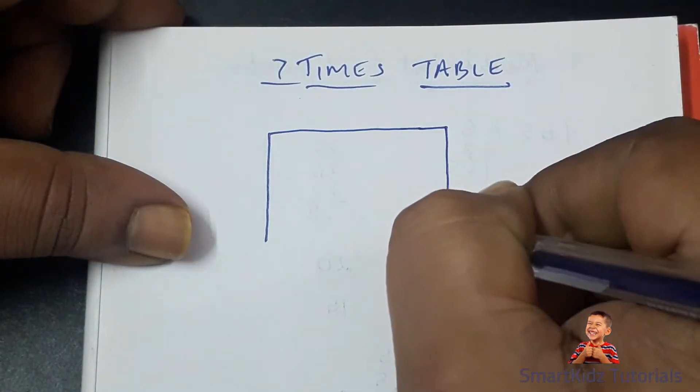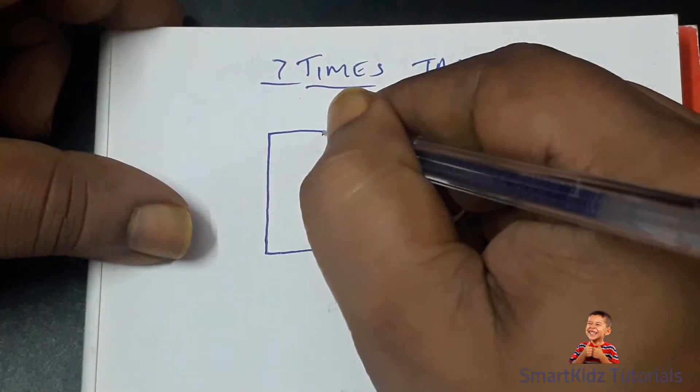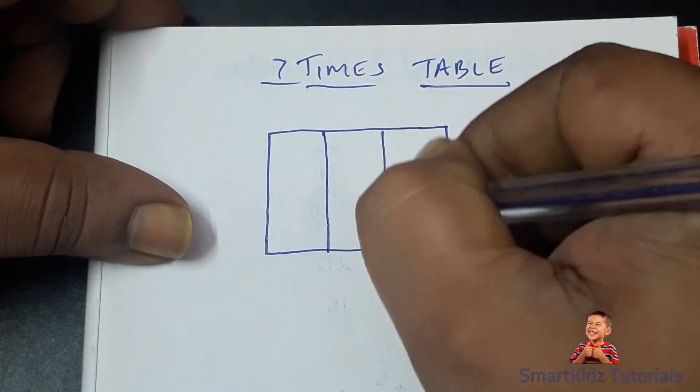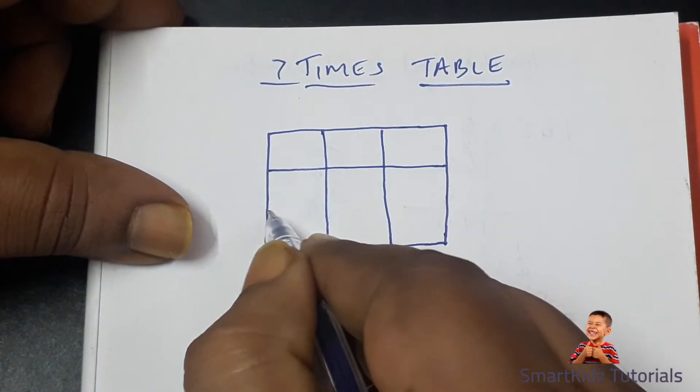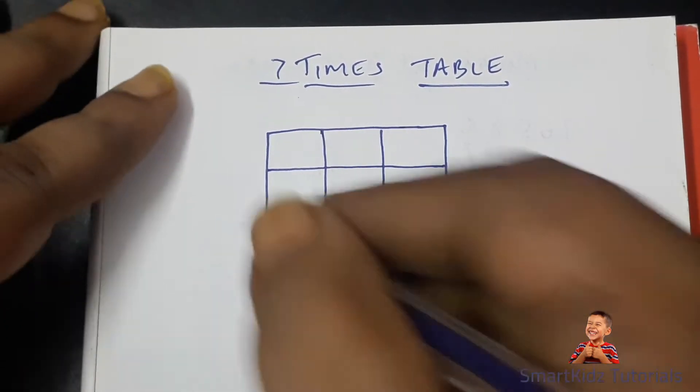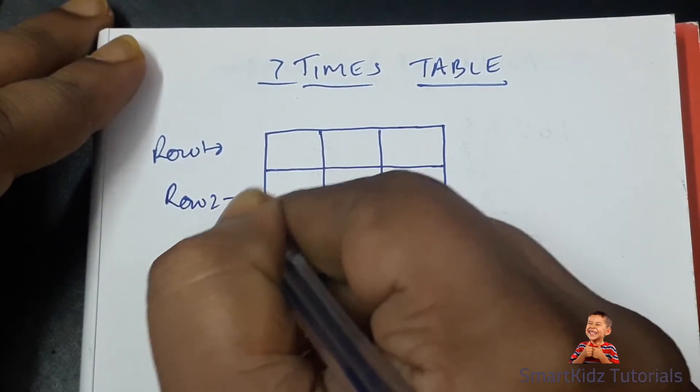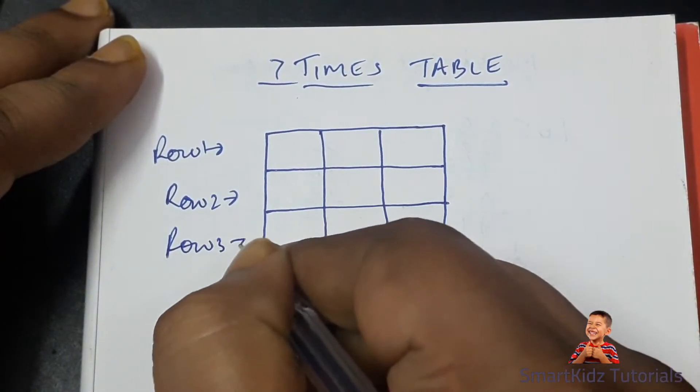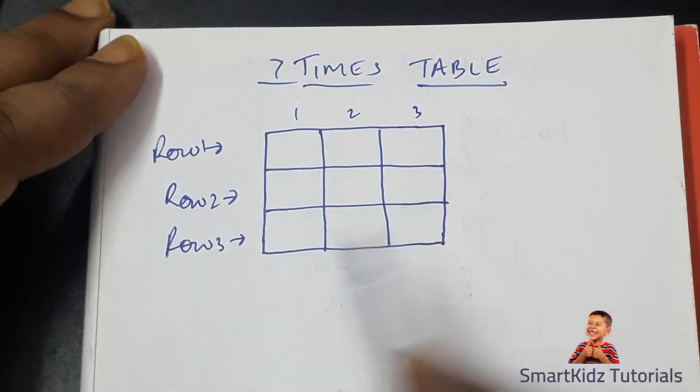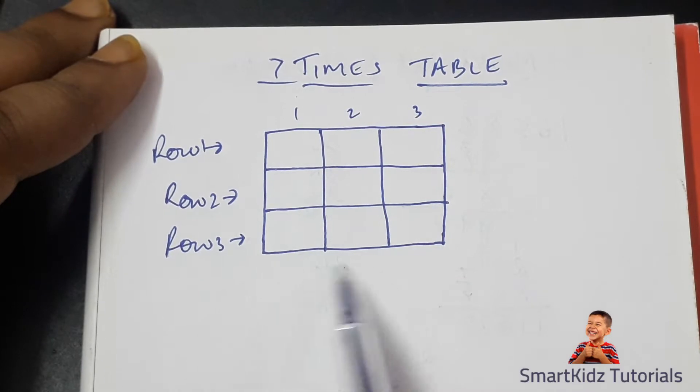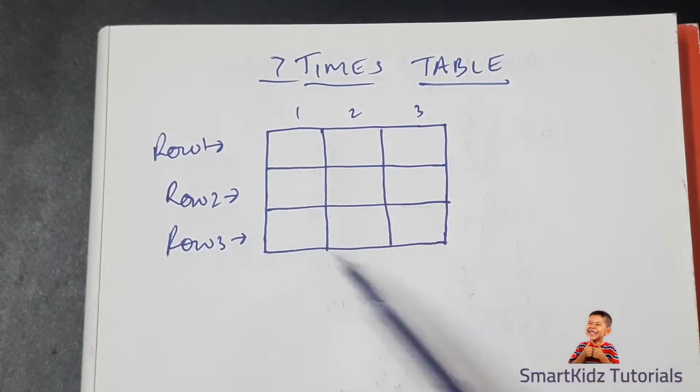After drawing the table, we will fill up the cells in the units place first, then we go to the tens place. We have three rows - row one, row two, and row three. Then we have columns one, two, and three. The vertical ones are known as columns, and the horizontal ones are known as rows.